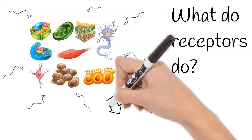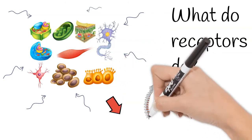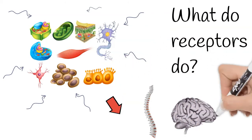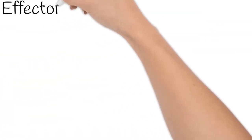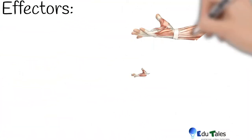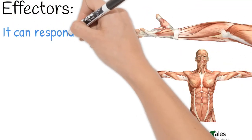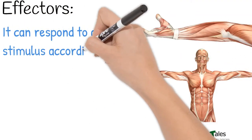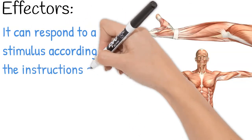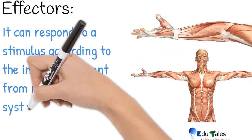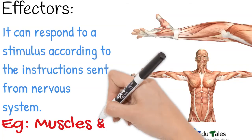Last but not least, what are effectors? They can respond to a stimulus according to the instructions sent from the nervous system. Examples of effectors are muscles and glands.